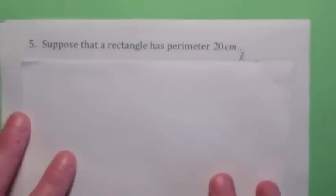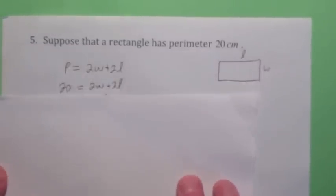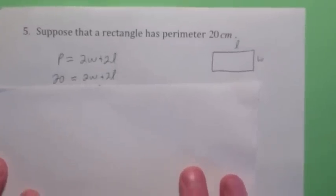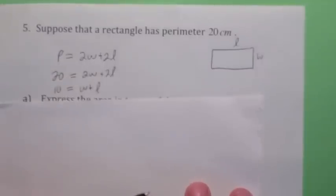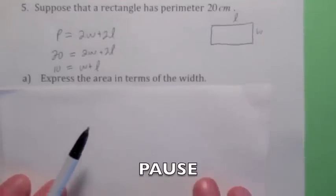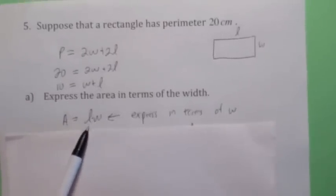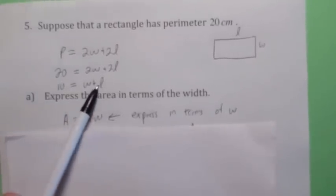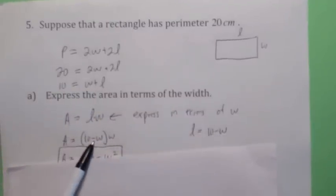Suppose a rectangle has a perimeter of 20 centimeters, so 20 equals 2w plus 2L. Dividing by 2 gives 10 equals w plus L. To express the area in terms of the width, solve for L: L equals 10 minus w. Then plug this into the area formula, A equals length times width, giving A equals w times the quantity 10 minus w.